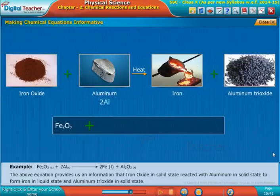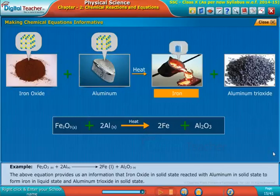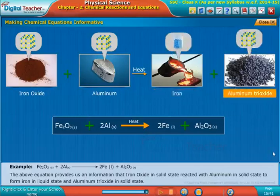The above equation provides the information that iron oxide in solid state reacted with aluminium in solid state to form iron in liquid state and aluminium trioxide in solid state.